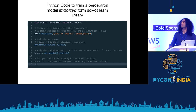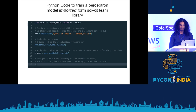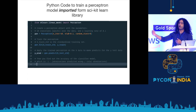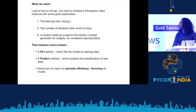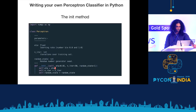This is the Python code to import the perceptron from scikit-learn: we import the perceptron classifier, give it three arguments — n_iterations, eta, and random_state — then use the fit method to pass training data, and the predict method to make predictions. From this we learn we need a perceptron class with three attributes: the learning rate eta, the number of iterations, and a random state. The instance must have a fit method, a predict method, and some way to calculate efficiency.